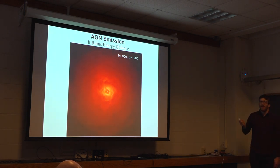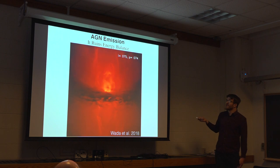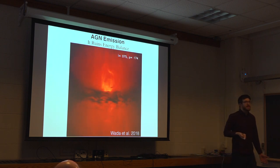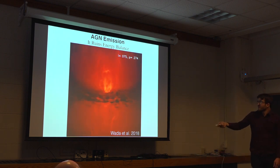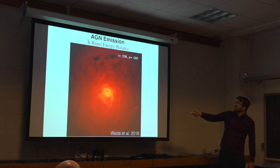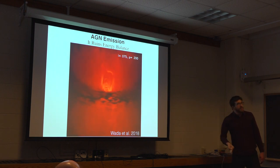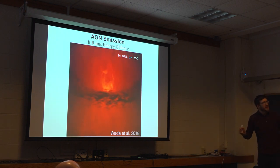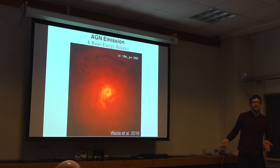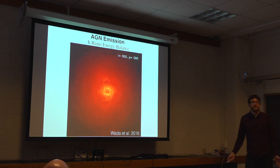Another thing that's very challenging to estimating the LIR from stars are AGN. AGN emit significantly in the infrared. This is a hydrodynamical simulation including radiative transfer of an AGN — this is all in 12 micron. You see the AGN here in the center, with thick dust torus around the outside. The AGN will heat up the dust, and then the dust will emit in the exact same regime where we're trying to measure emission from stars, so these two things get confused very often.